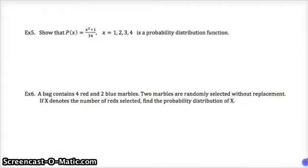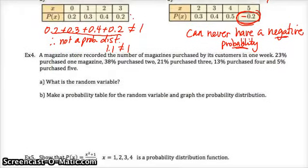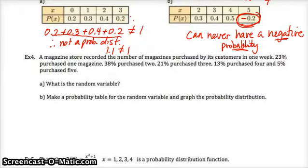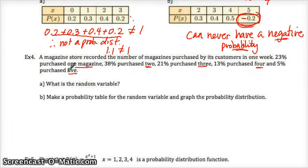Problems 4, 5, and 6 are just having you either create a probability distribution or figure out what the probability results are. Example four: a magazine store recorded the number of magazines purchased by its customers in one week. 23% purchased one magazine, 38% purchased two magazines, 21% purchased three magazines, 13% purchased four magazines, and 5% purchased five magazines.